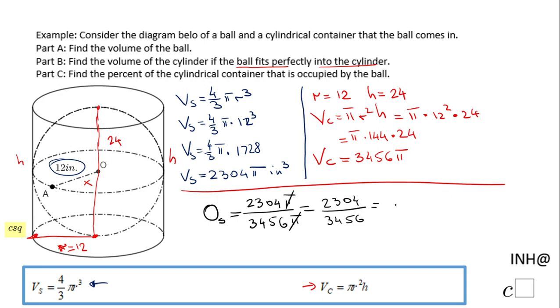And that will be 0.666667. Now let's take the percentage. How do I get a percentage? I'm going to move the decimal point twice to the right, so the percentage will be, rounding to the nearest hundredth, 66.67%.